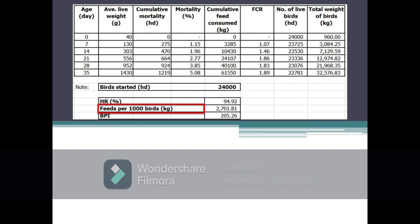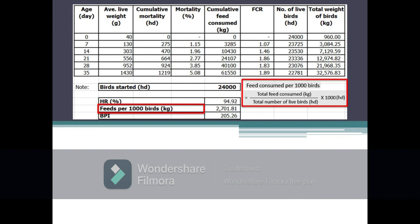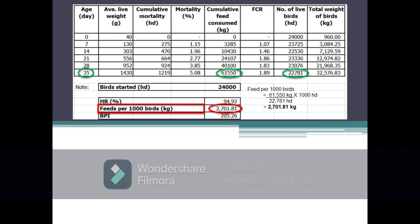Next is feeds for 1000 birds, which refers to the calculated amount of feeds consumed for 1000 birds at a given period, taken at the end of the growing period or harvest time. It is calculated as cumulative feed consumed in a given period divided by the total number of live birds on the same period, multiplied by 1000 birds. In the given example, cumulative feed consumption at day 35 is 61,550 kilograms and the total number of live birds is 22,781 birds, so feed consumption for 1000 birds equals 61,550 ÷ 22,781 × 1000 = 2,701.81 kilograms.